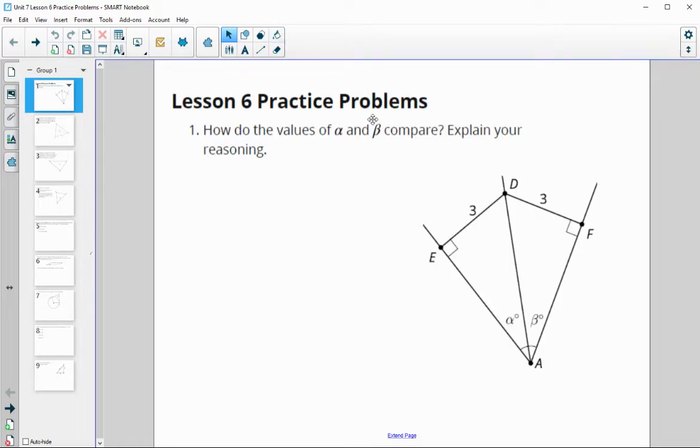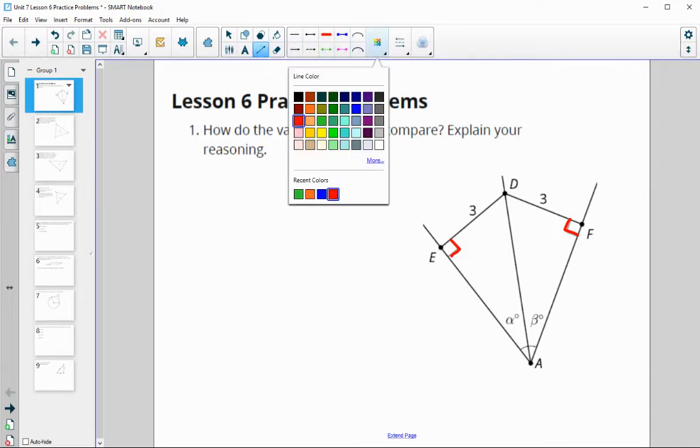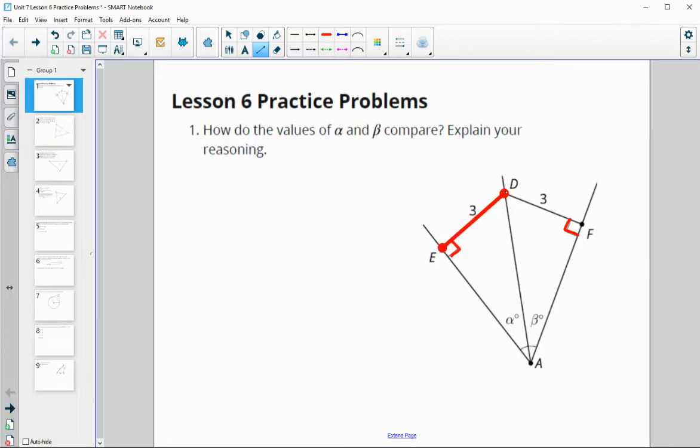Number one asks how do the values of alpha and beta compare? You hopefully noticed the right angles here and here, and that this segment was marked congruent to this segment. Since we've got that 90 degree angle, this is the distance from D to this side. The distance from D to this ray is equal to the distance from D to this ray, which means that D is actually on the angle bisector, which means that alpha is equal to beta.